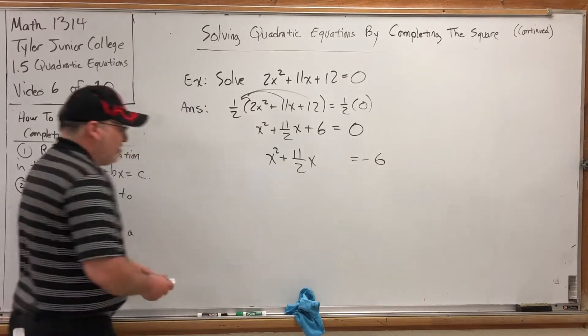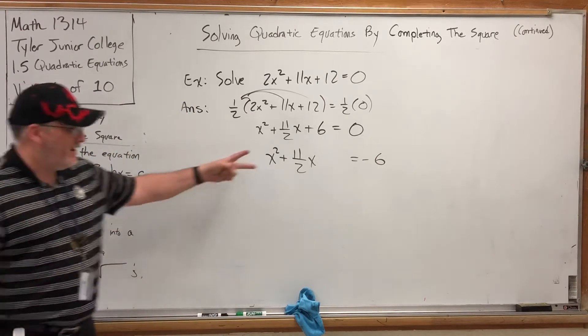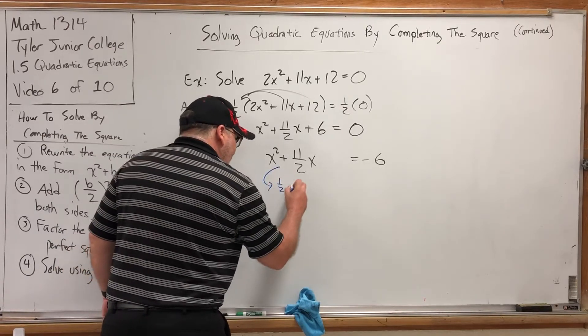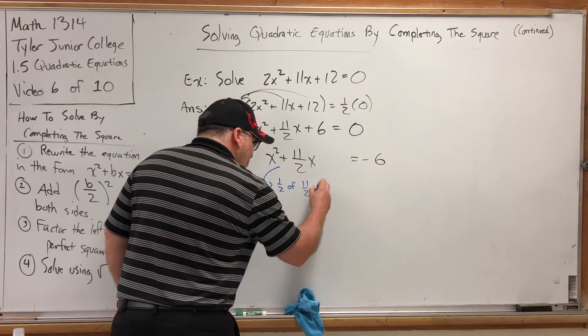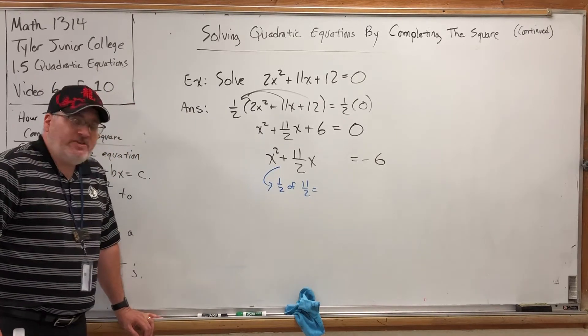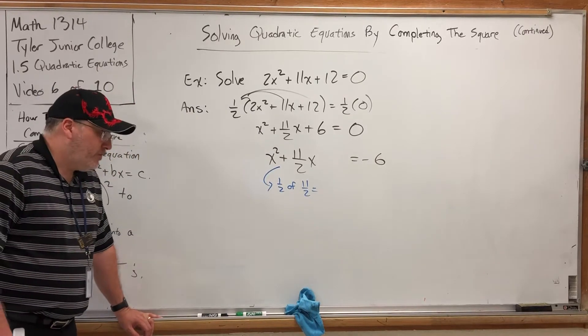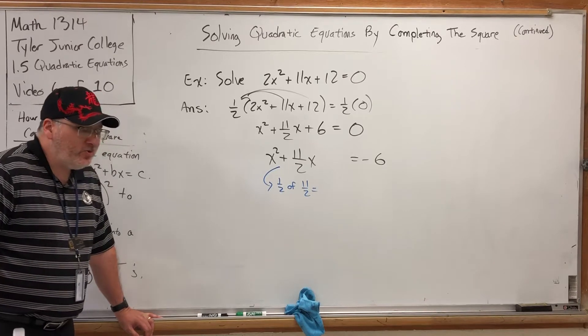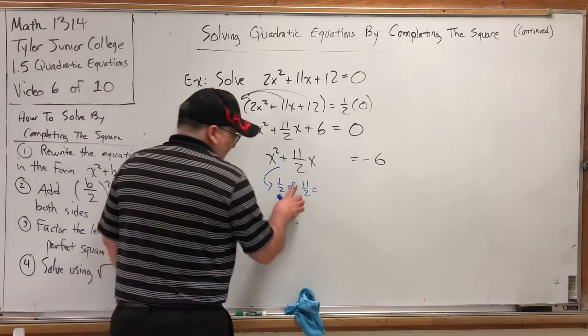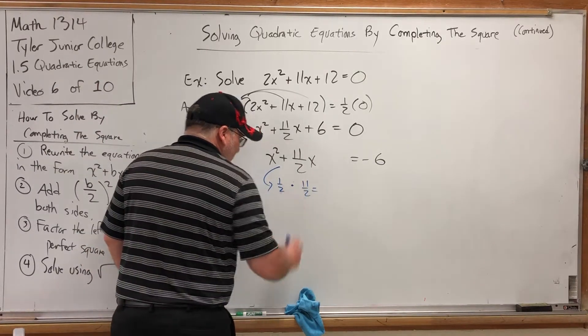Now, you don't actually have to write b over 2. You don't have to write 11 halves over 2. What you need to think, though, is what is half of 11 halves? Actually, it's not that difficult if you know that in arithmetic, the word of usually means multiply. So half of 11 halves is 1 half times 11 halves.